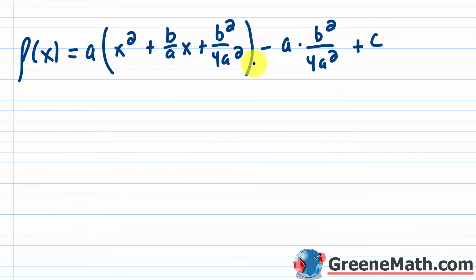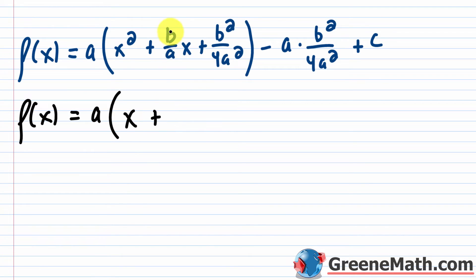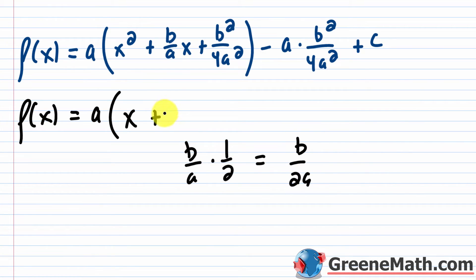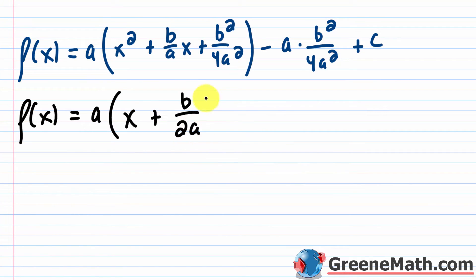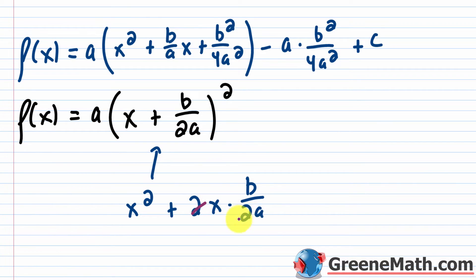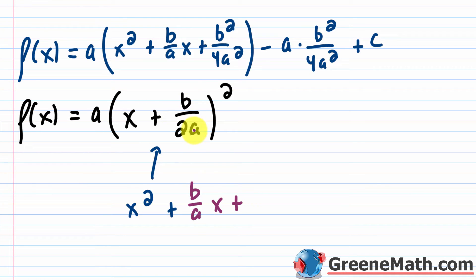Now we factor the perfect square trinomial. This becomes a times the quantity x plus b over 2a, squared. We can verify: expanding gives x squared plus 2 times x times b over 2a — the twos cancel to give b over a times x — plus b squared over 4a squared, which matches x squared plus b over ax plus b squared over 4a squared.